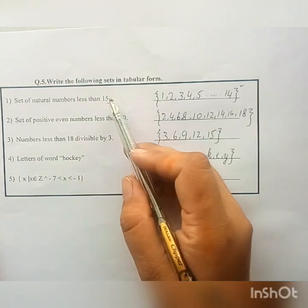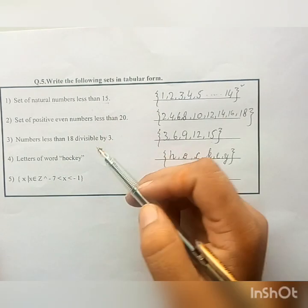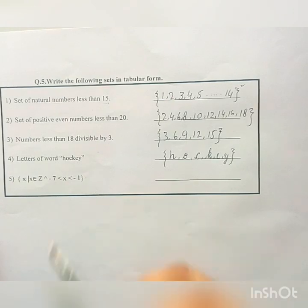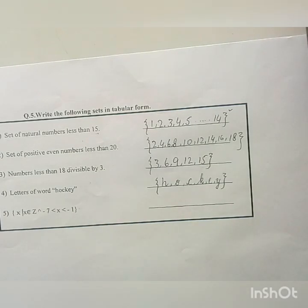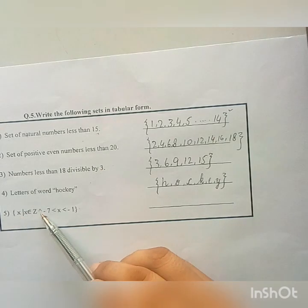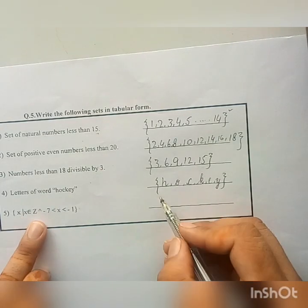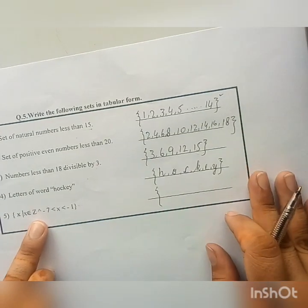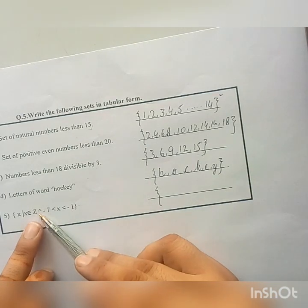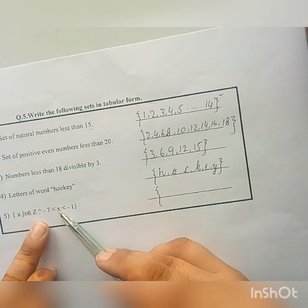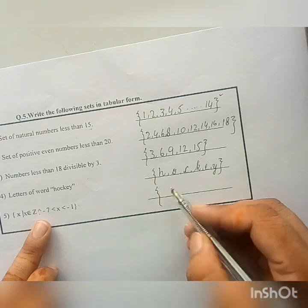Next, these are all set descriptive form. The last one is given in set builder form. That is, {x | x ∈ Z}. It means the set is the set of integers. Z represents integer. And x lies between -7 and -1.